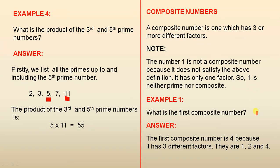Example 1: What is the first composite number? The first composite number is four because it has three different factors. They are one, two, and four.